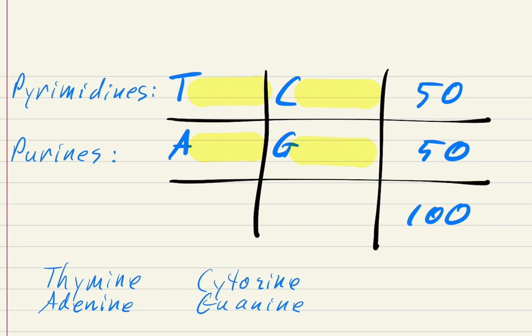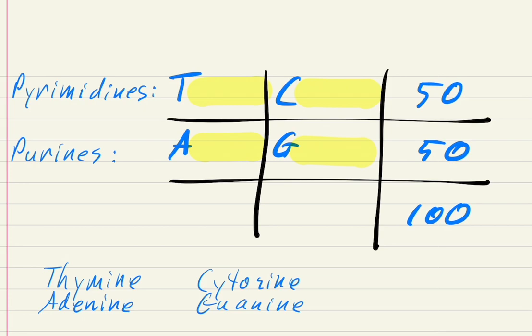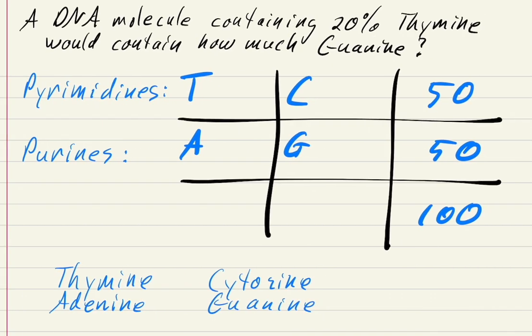Literally, just draw yourself a tic-tac-toe board, fill in the information I've shown you, and the rest you can do on your own. So let's do an example: a DNA molecule containing 20% thymine would contain how much guanine? Here we're given the thymine value and we're asked to figure out the guanine value. Let's put in the number we know — T is 20%.